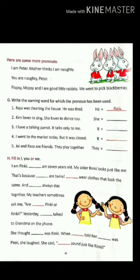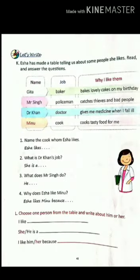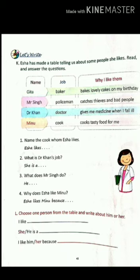For example, 'We are twins.' Next, let's write. Here a girl named Isa has made a table telling us about some people she likes. Now you have to read this table and answer questions like: what are the names of the people Isa likes, what are their jobs, what do they do, and why does Isa like these people? For question number L, choose one person from the table and write about him or her — who you like, what their job is, and why you like them.